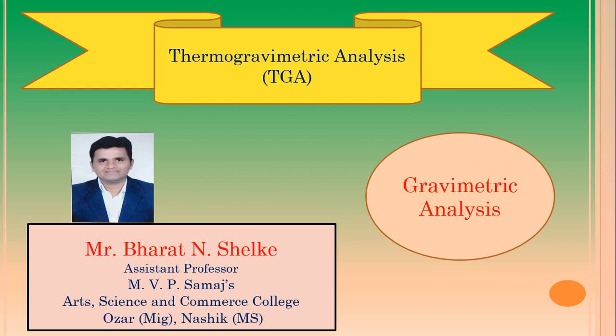Today I am going to explain thermogravimetric analysis, or shortly it is called as TGA. In gravimetric analysis, a number of operations are carried out and the last operation is ignition. During the ignition, the substance is heated at a high temperature or at a constant temperature and finally the weight of the substance is recorded. In thermogravimetric analysis, the same technique is applied — the substance is heated and simultaneously the weight of the substance is recorded.